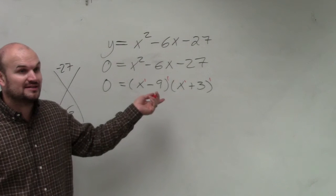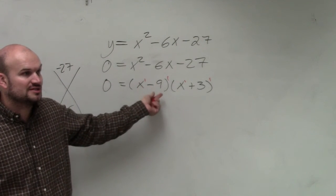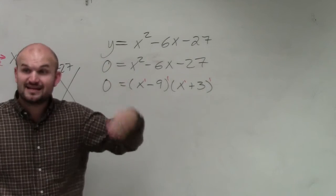So what does that tell you about those two? What does it tell you about our solutions? The graph is going to cross at those, right?